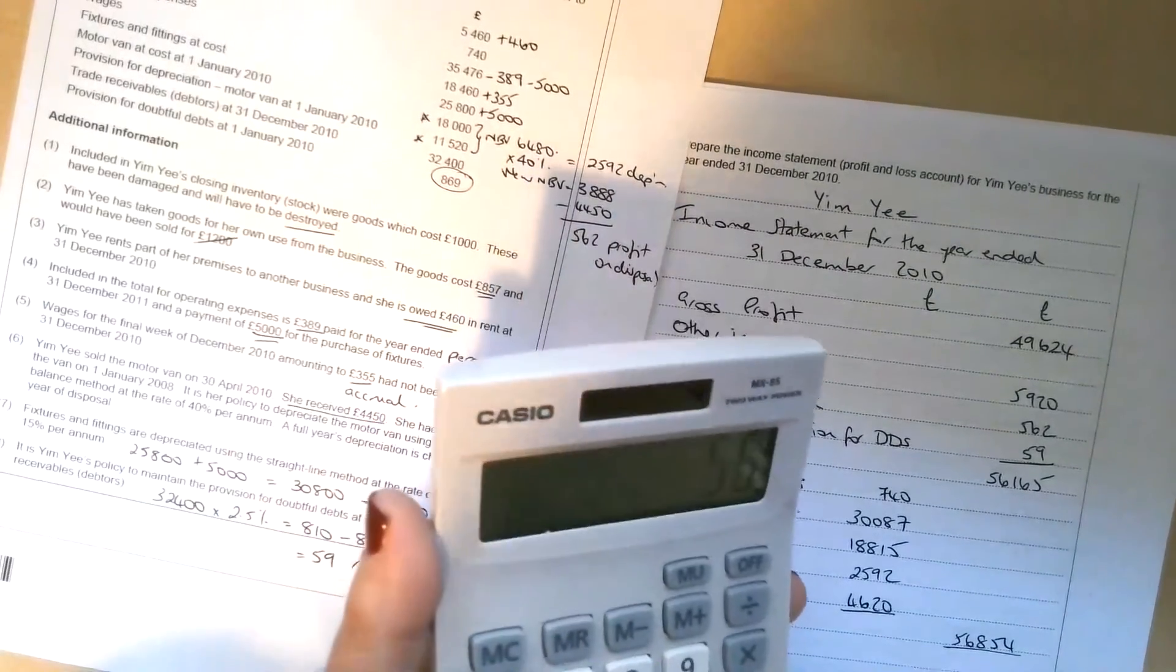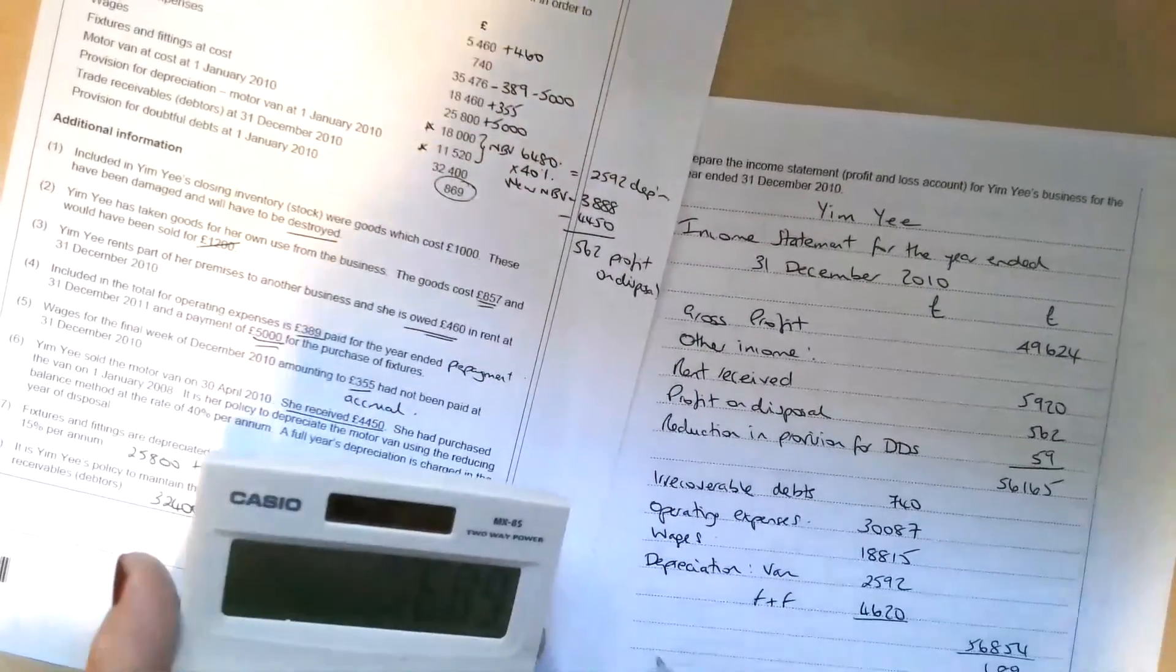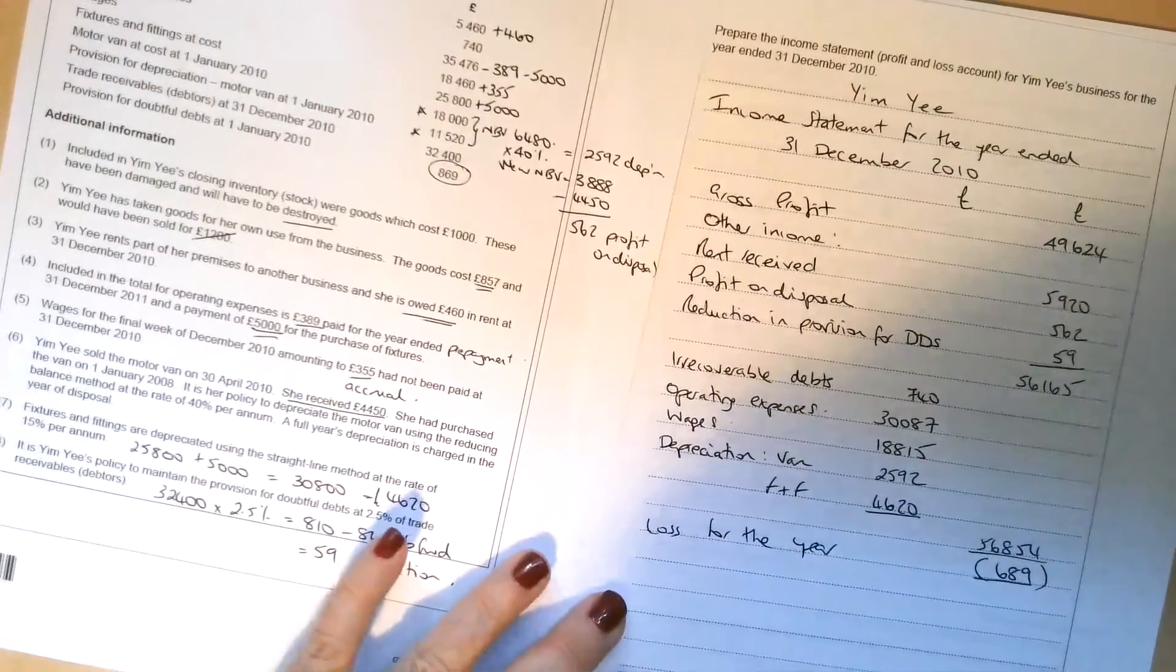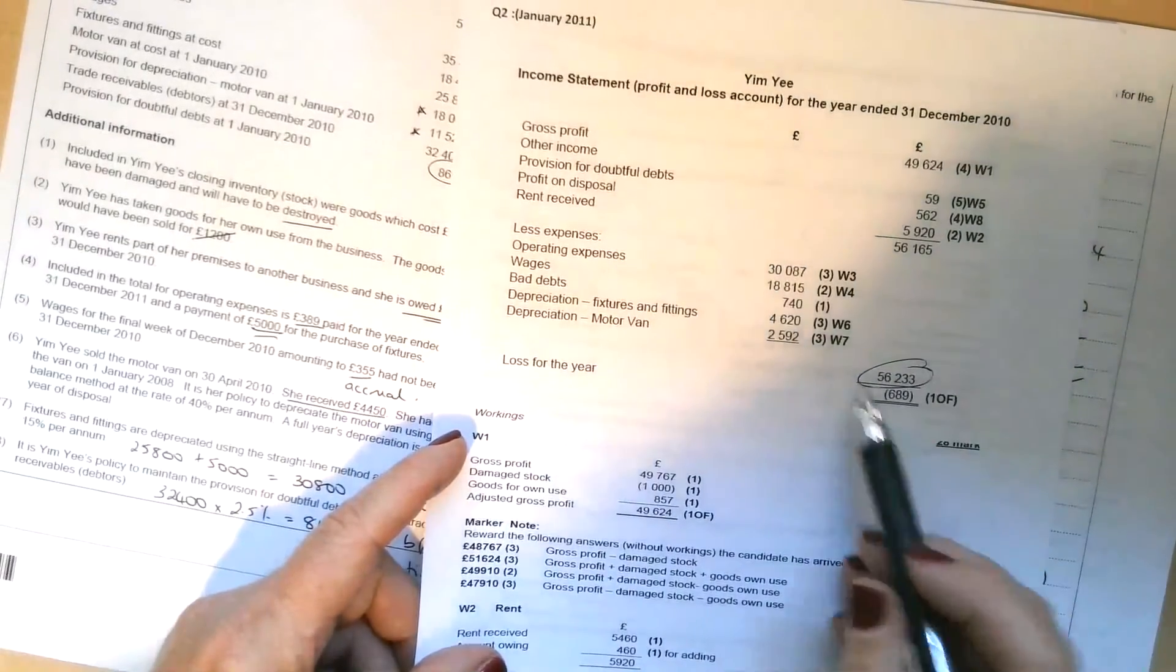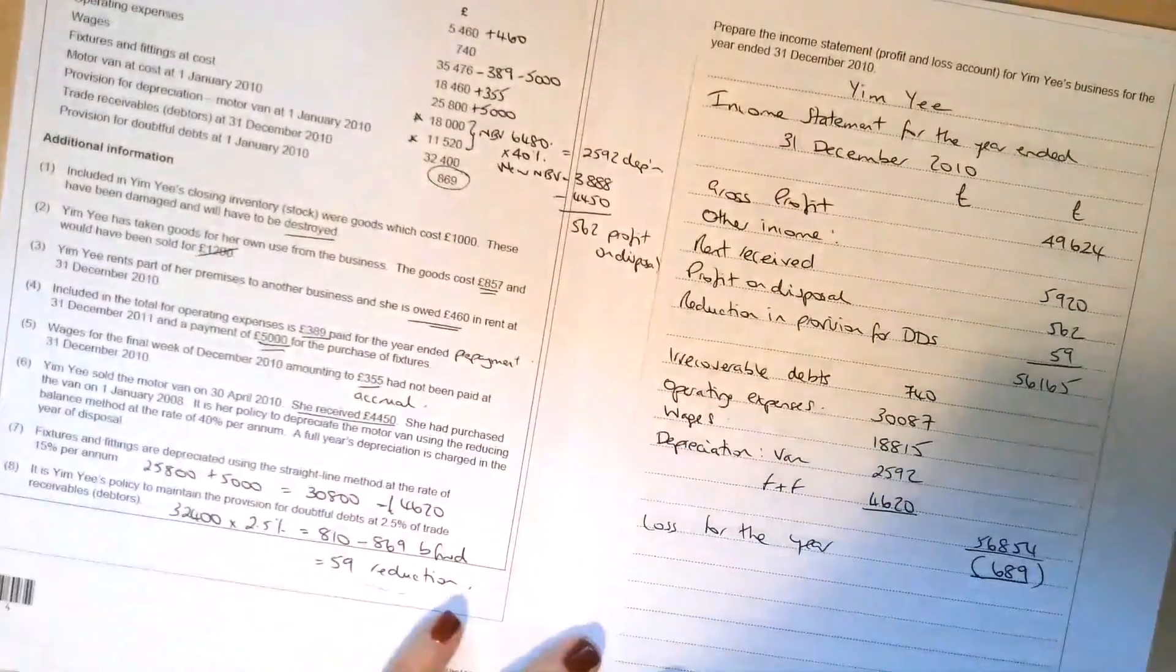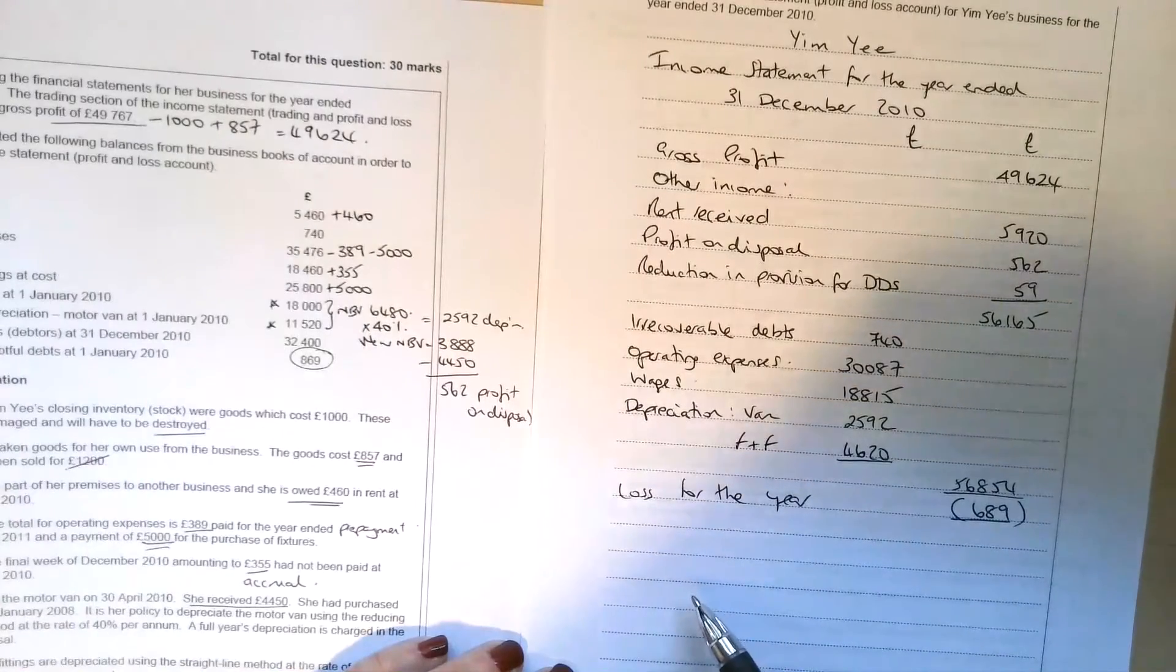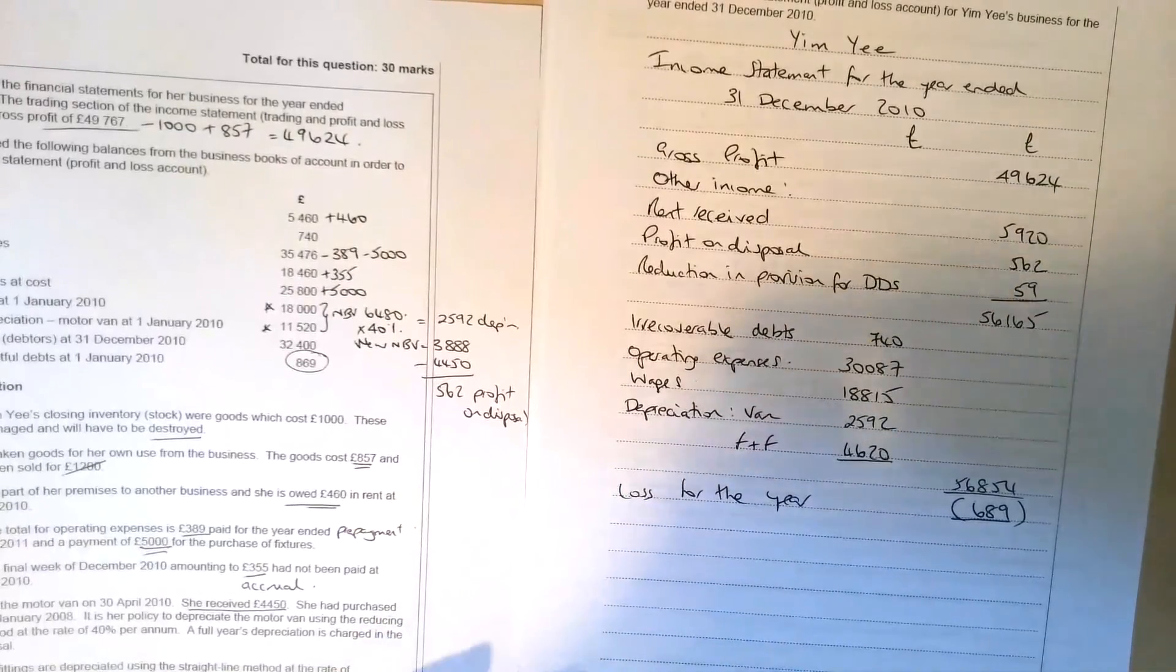And then if we take that away, we get a loss of £689. So loss for the year, it needs to go in brackets, £689. Now the reason I was hesitating there is I've just looked at this answer and saw the original answer. There's a typo in the original answer. So anyone that's called up the mark scheme for this, just be aware of that. I've double-checked and the total for the expenses is definitely £56,854. So the loss for the year, £689, put it in brackets just to make sure it's correctly labeled, and that's the end of that question. Thank you very much for watching.